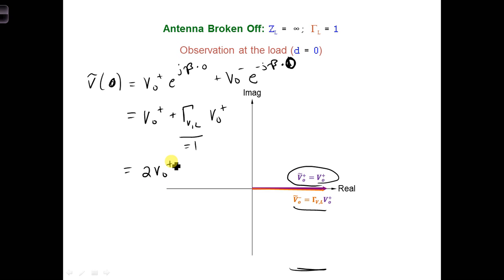Next, plot the voltage phasors at a distance d equal to lambda over four.